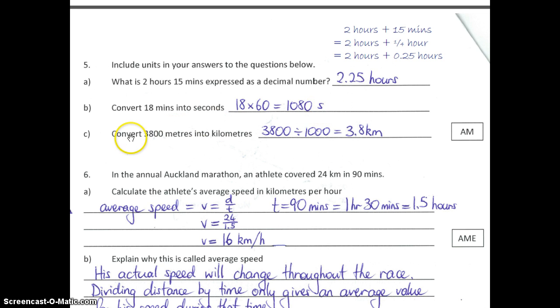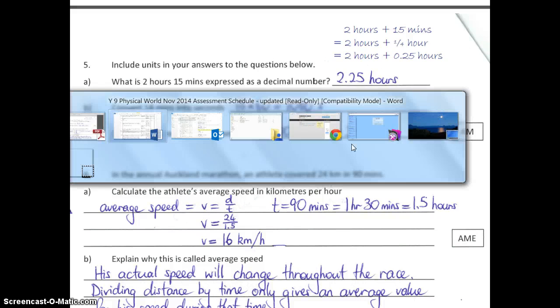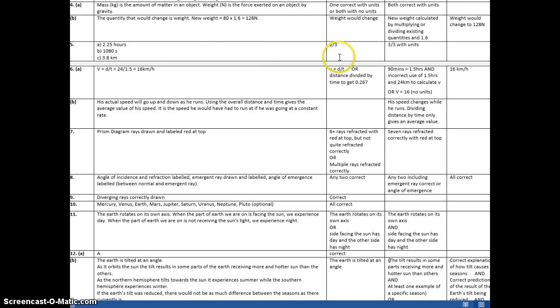Part 3 was convert 3,800 metres into kilometres. To go from metres to kilometres, we divide by 1,000 because there are 1,000 metres in one kilometre — kilo means 1,000. So we get 3,800 divided by 1,000, which gives us 3.8 kilometres. For marking: getting 2 out of 3 correct, regardless of units, was enough to achieve. Getting all 3 with correct units was enough for merit.